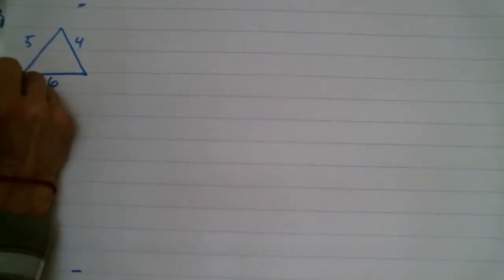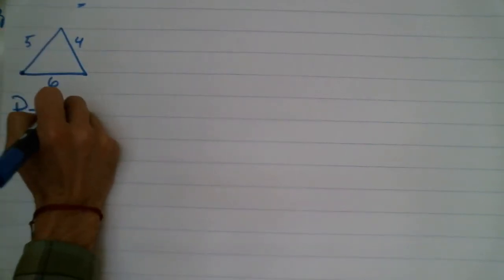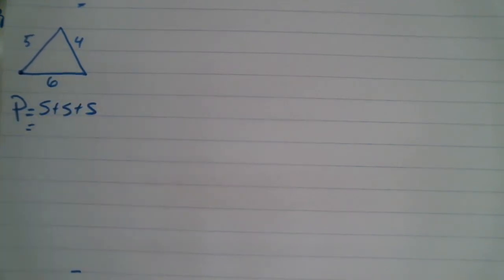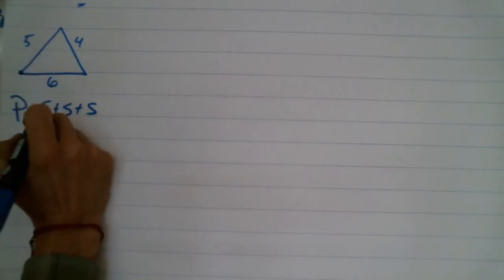P stands for perimeter. Now with all shapes, all you're doing is adding up the sides. It has to be added. Like if I started here and I walked around, I'd go 5, then 4, then 6. On a triangle, it's going to be side plus side plus side. Please write that down.